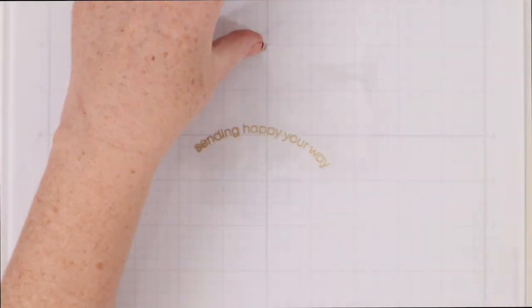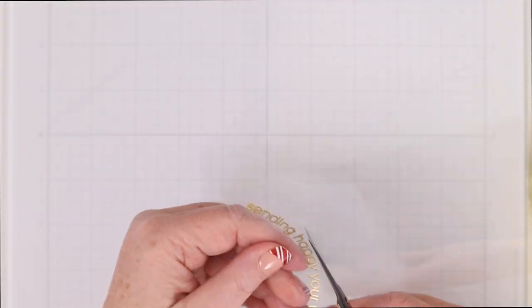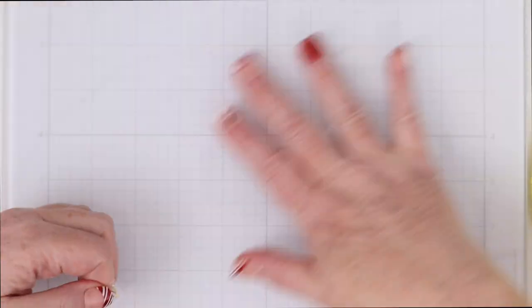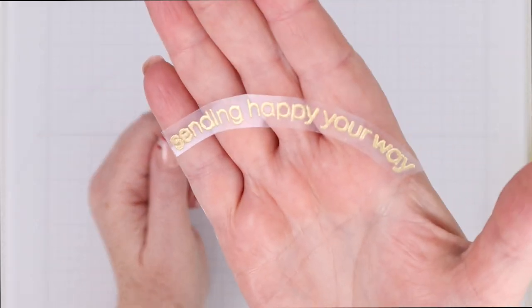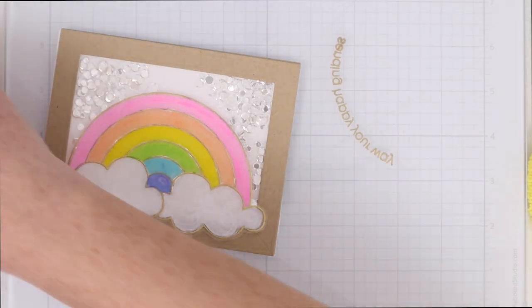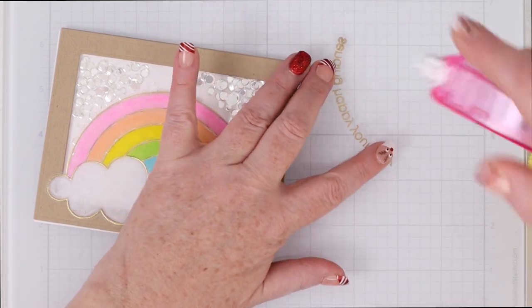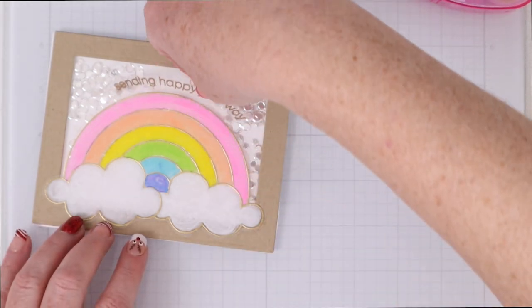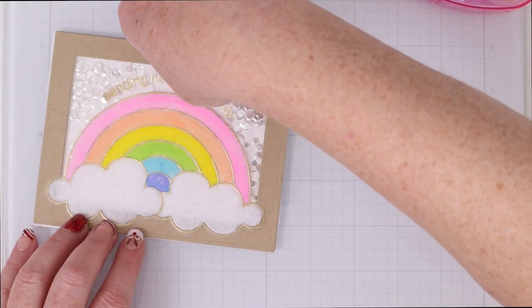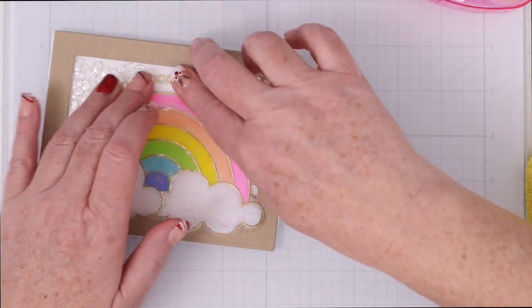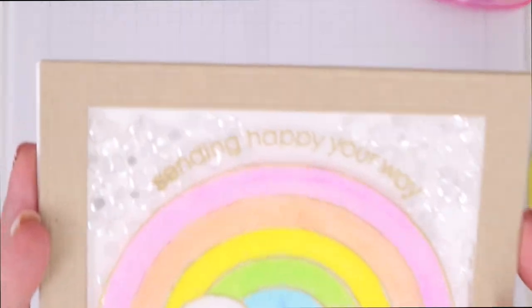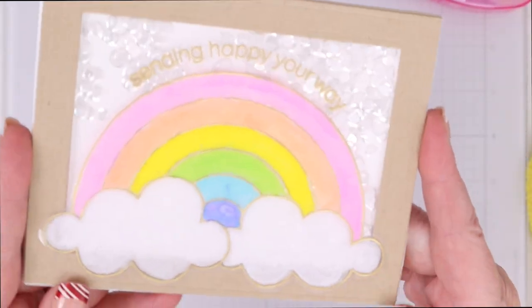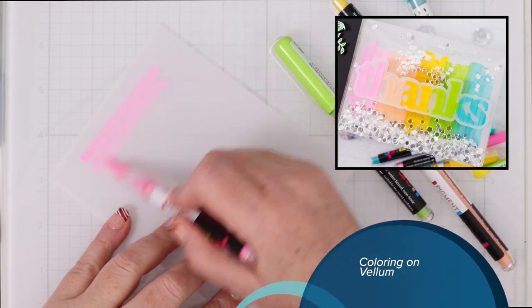Again if you have smaller images you could have done all of this on the piece that is going to be your shaker window but because I kind of used something a little bit larger I decided to kind of layer things on top of each other so sending happy your way it's such a sweet little sentiment it's curved. I'm going to flip it over and again just a little bit of tape runner you're not going to be able to see it especially with all those shaker goodies going on in the background and just place that on top of that window that we created with the cool coloring with the pigment markers I just love the way they look there's something very I don't know 80s about that I think it's very cute.